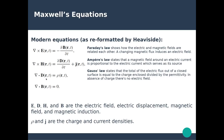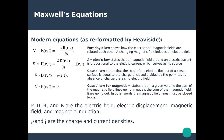The electric displacement D is proportional to the electric field E, with the permittivity included. In the absence of charge — for instance, in a vacuum — there is no electric displacement and no electric field. The last equation, Gauss's law for magnetism, states that in a given volume the magnetic field lines going in and going out are equal, meaning magnetic fields form closed loops. This implies the non-existence of magnetic monopoles.